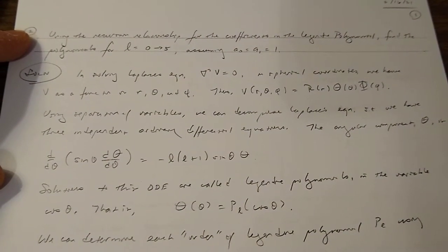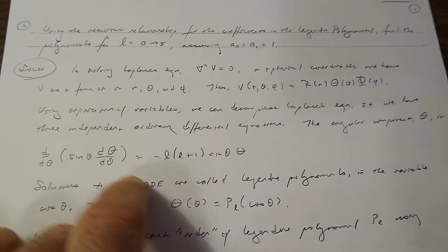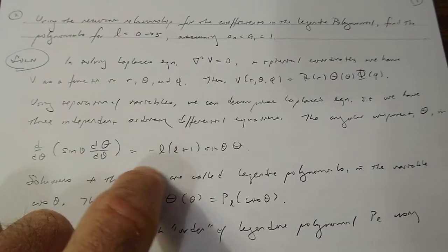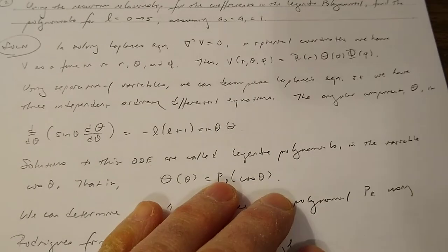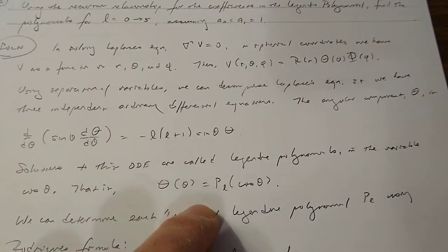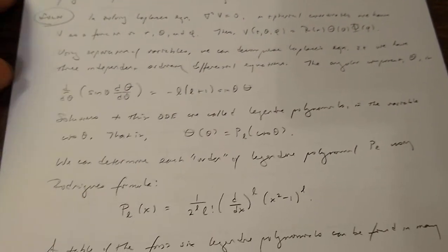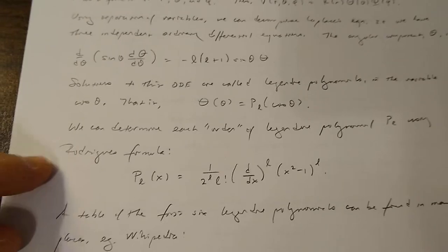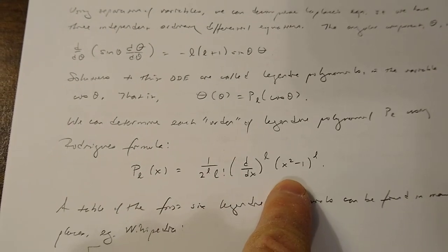When all the dust settles, in spherical coordinates you get an equation that basically tells you how the angular value changes. Solving this differential equation requires something called a Legendre polynomial — it's a polynomial in cosine of theta. If you're already studying this you'll have exposure to it, and the purpose of this video is to walk you through the recursion relationship for the coefficients. There's also Rodriguez's formula, which is basically for the Lth order Legendre polynomial.